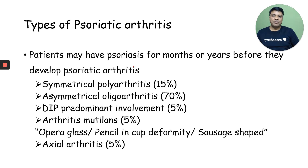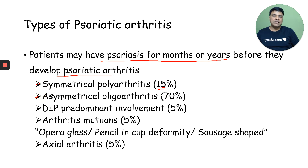Patients with psoriasis may have psoriasis for months or a year before they develop psoriatic arthritis. Symmetrical polyarticular is seen in around 15% of patients. Asymmetrical oligoarticular is seen in around 70% of patients. Distal interphalangeal joint predominant involvement is seen in 5%. Arthritis mutilans is again seen in 5%, and it is associated with opera glass, pencil-in-cup deformity, or sausage-shaped fingers.